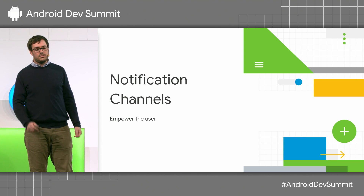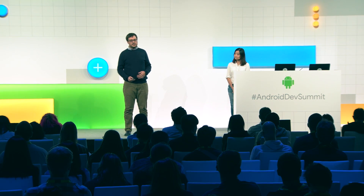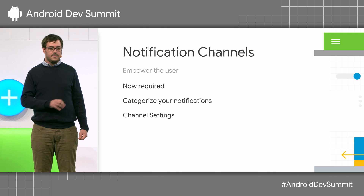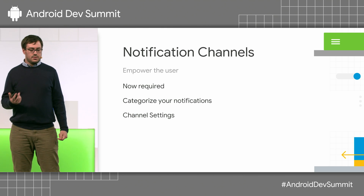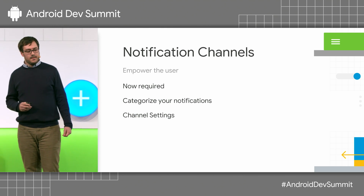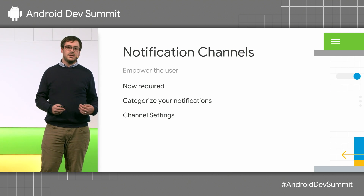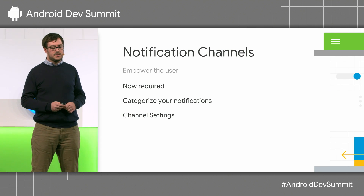Notification channels provide granular control to your notifications for the user. You should empower the user, and clearly, channels are the way to empower them. They're now required on all apps as they're required on API 26. They help you categorize your notifications and help the user interact with them. They allow the user to customize the settings — the user has the final say. If you think something's important and they don't think it is, they can tell you this.